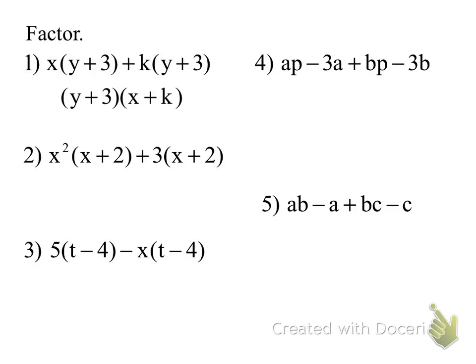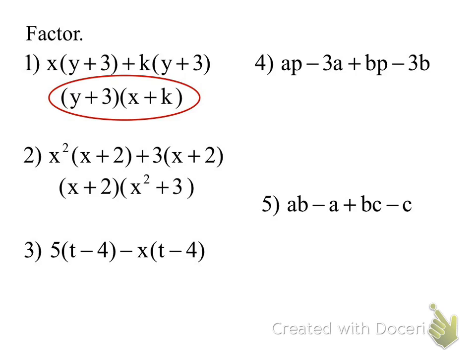So what do I do for the next one, Chloe? You would factor out the x plus 2. Good. And what's left? X squared plus 3. Perfect. Next one, number 3. Elise: the quantity of 2 minus 4 times the quantity of 5r minus x. Good.